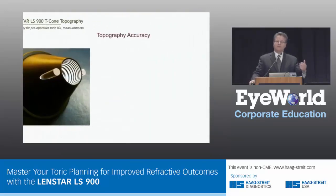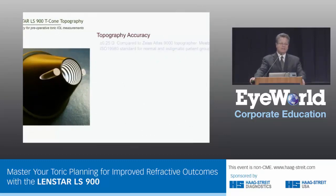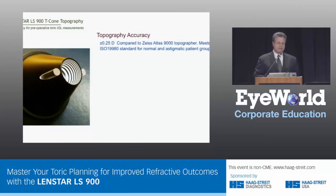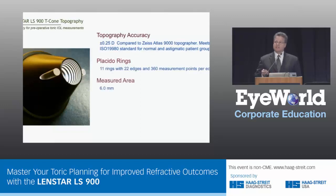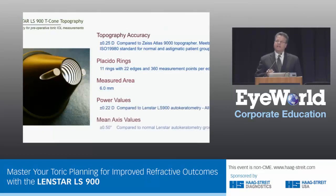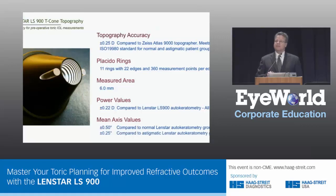This is what the T-cone looks like — it goes right on the front of the LENSTAR. We like to joke that this turns the LENSTAR into a Swiss Army knife: it doesn't have a toothpick and a spoon, but it has just about everything else. It looks just like the Zeiss Atlas topographer with the same sort of Placido rings. The measurement area is about 6 millimeters instead of 9 millimeters. It was validated against the Atlas 9000 topographer and came out almost exactly the same, both for normal spherical eyes and astigmatic eyes, and also validated against the LENSTAR Ks, which are, in my opinion, the best Ks in the business.